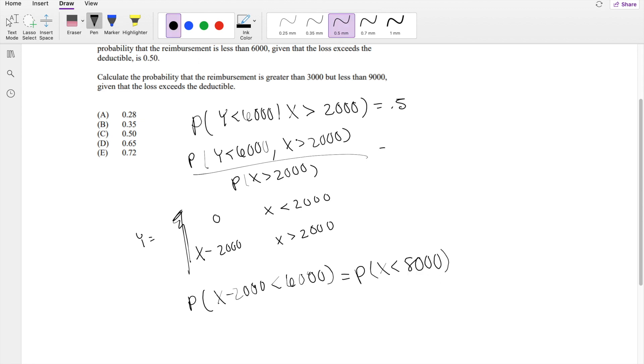So the intersection of both of these is equal to the probability that X is less than 8,000. And it has to be greater than 2,000, so the intersection here is going to be the probability that X is between 2,000 and 8,000, divided by the probability that X is greater than 2,000.